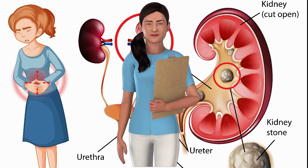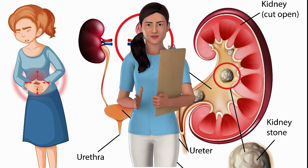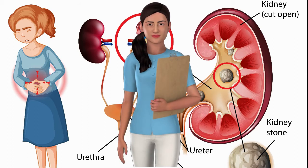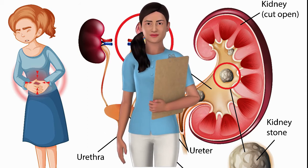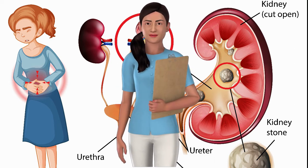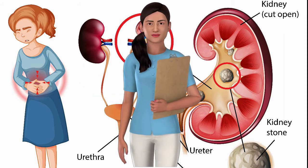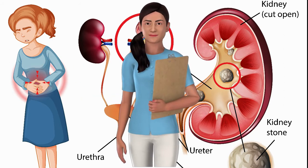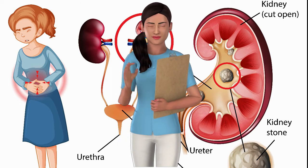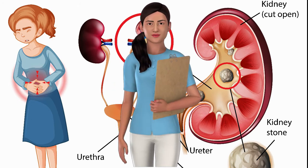Kidney stones — what are they and who gets them? Also known as renal calculi, kidney stones are solid masses that largely develop in the kidneys. However, they can also pop up anywhere along your urinary tract. They are made from salts and minerals and are notoriously painful when passing through the body.